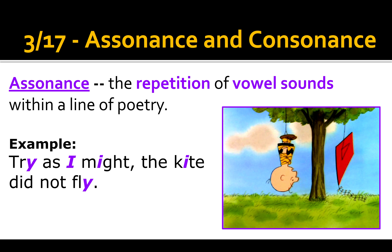What assonance actually means is it's the repetition of vowel sounds within a line of poetry. The example below: 'try as I might, the kite did not fly.' The vowel sound is that long I sound. It's spelled sometimes with Y's, sometimes with I's, but it repeats and this makes it musical in a way without having to rhyme.